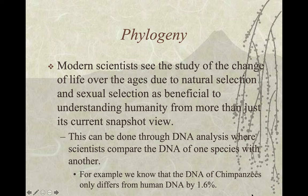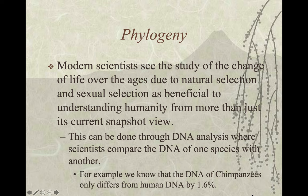Does that mean that humans can breed with chimpanzees? The answer is no. They looked at all the great apes, and all the great apes have 48 chromosomes, whereas humans only have 46. What they think happened is that, if you look at the great ape chromosome structure, they have two small chromosomes that fused together and made the 46th chromosome, dropping us down to 46 chromosomes. That's why humans are different from chimpanzees.